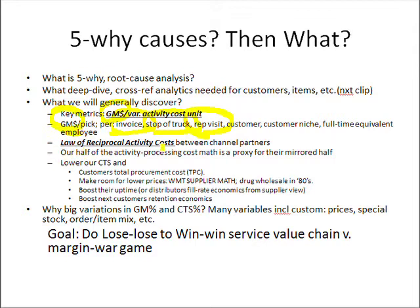Another thing we realize is the law of reciprocal activity costs between channel partners. Whatever our costs are on our side of the fence, our channel partner really has to be a mirror of those costs more or less. If we have humans talk to their humans, their humans cost money. If we have paperwork to deal with, they have paperwork. If we have to do picking, they have to do ordering and receiving. So if we went to our customers or suppliers and said, 'do you have cost-to-serve math?' — they might say no, but we say we do, and we have half of the other side of the coin. We can use our math to estimate that their math is somewhat similar, and now we can have an expanded conversation about how we change the one-size-fits-all process — which in some cases has been dysfunctionally lose-lose.